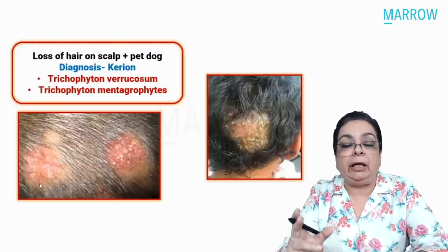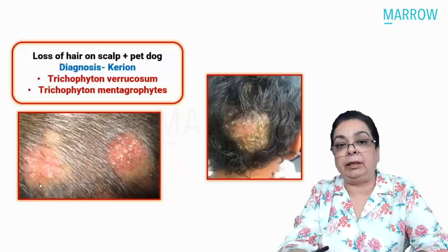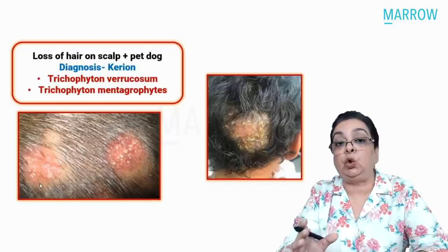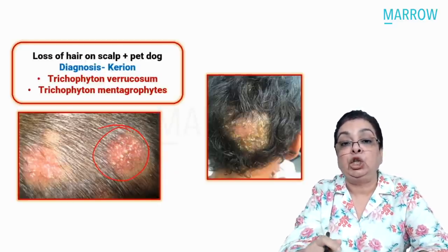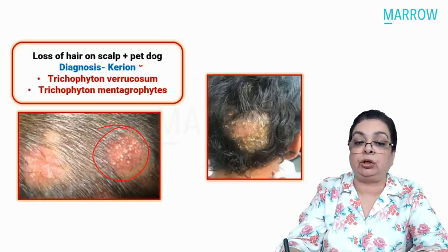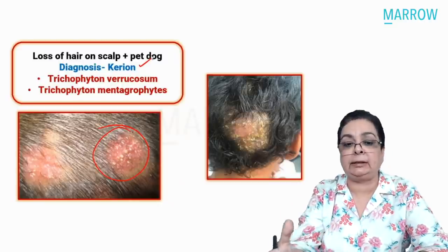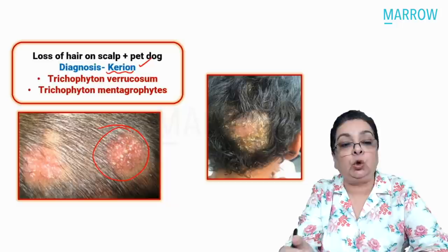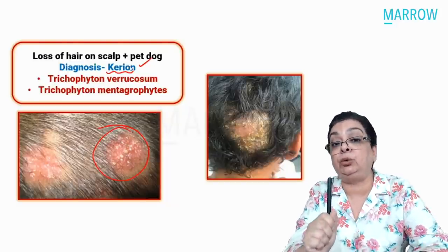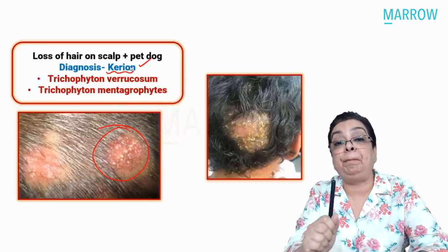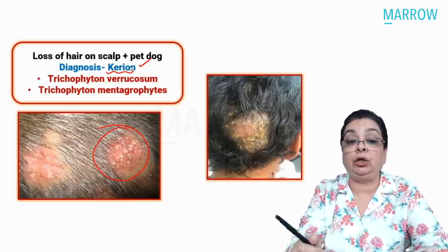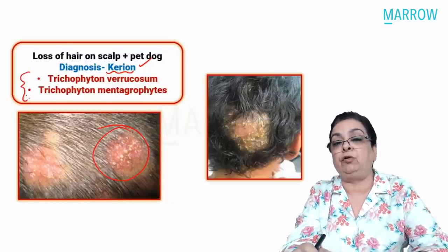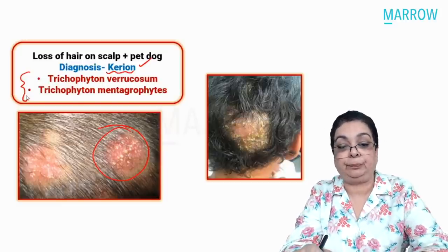A second dermatophyte question involved kerion — an image-based question showing a child with a scalp swelling, hair loss, and pus points. The diagnosis was kerion. A clinching clue was the child's pet dog, indicating a zoophilic dermatophyte. Kerion is caused by two important zoophilic dermatophytes: Trichophyton verrucosum and Trichophyton mentagrophytes.